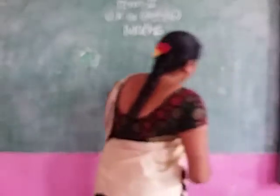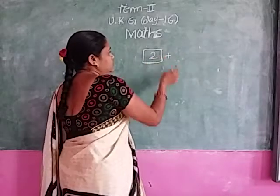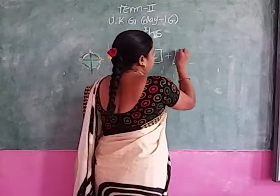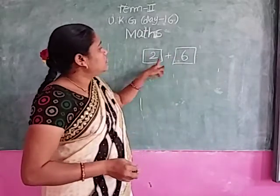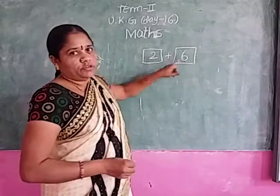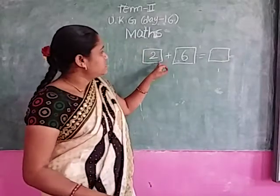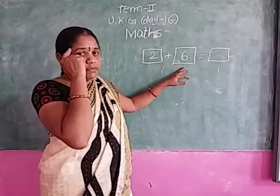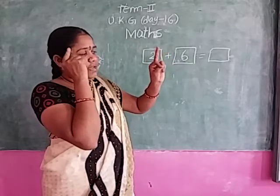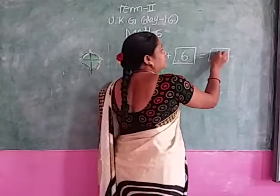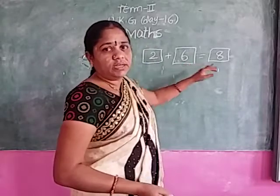Look at me all of you. I have 2 chocolates. Plus, my uncle gives me 6 more chocolates. I have 2, my uncle gives me 6 more. Which is the greater number? 6. Keep 6 in your mind. Open 2 fingers. After 6: 7, 8. What is the answer? 2 plus 6 equals 8.